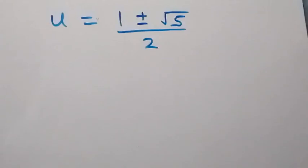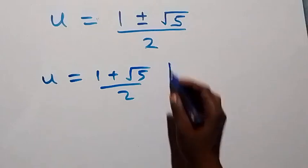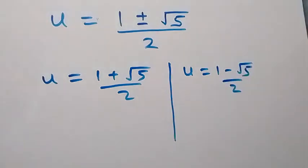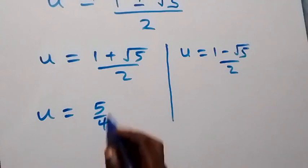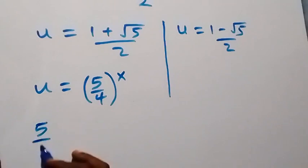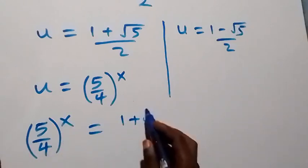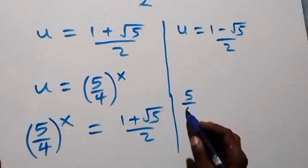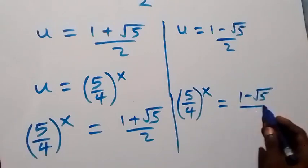We get two values of u: u equals (1 plus root 5) over 2, and u equals (1 minus root 5) over 2. Recalling that u represents (5/4) raised to power x, we have (5/4)^x equals (1 + √5)/2 on one side, and (5/4)^x equals (1 − √5)/2 on the other.